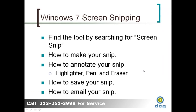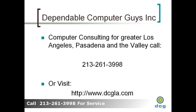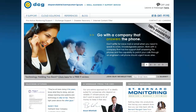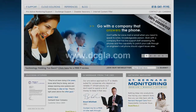So today you've learned how to find the tool by searching for the word snip in your Windows Start menu, how to make a snip, how to annotate it with the highlighter and the pen, how to save your snip, and how to email your snip. I hope you enjoyed the utility and that you'll be able to make good use of the Windows 7 screen snipping utility. And if you need great computer consulting in the greater Los Angeles area — Pasadena or the Valley — just give us a call at 213-261-3998. For network consulting in Los Angeles, call 213-261-3998.